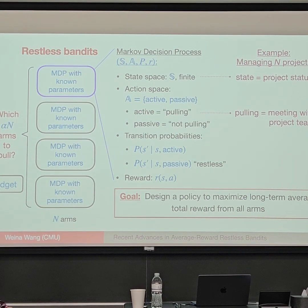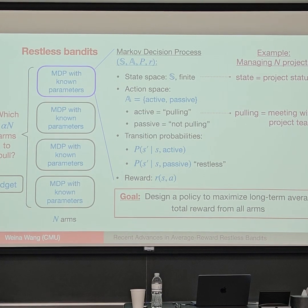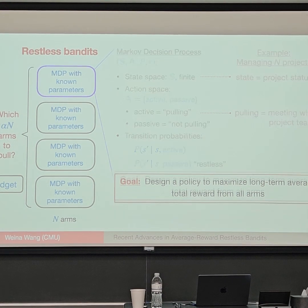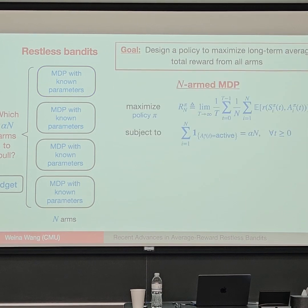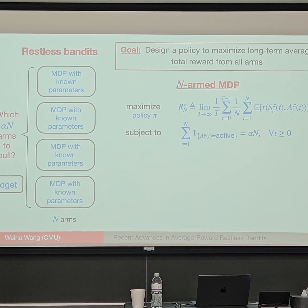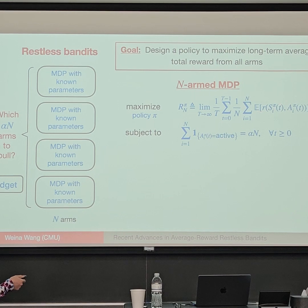Question from audience: Can we think about the whole problem as a bigger MDP? Yes — this whole thing is a big MDP, which we call an N-arm MDP. The expected reward every time step is averaged first over the arms to get reward per arm, and then we take the time average. The budget constraint is an equality constraint requiring exactly alpha-N arms to be pulled each time step.